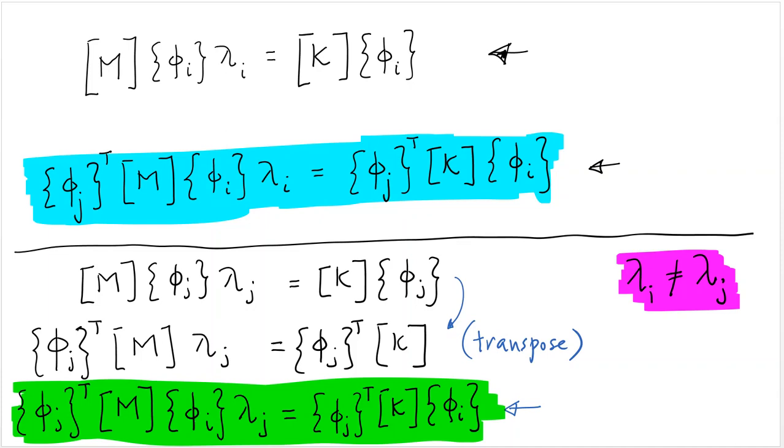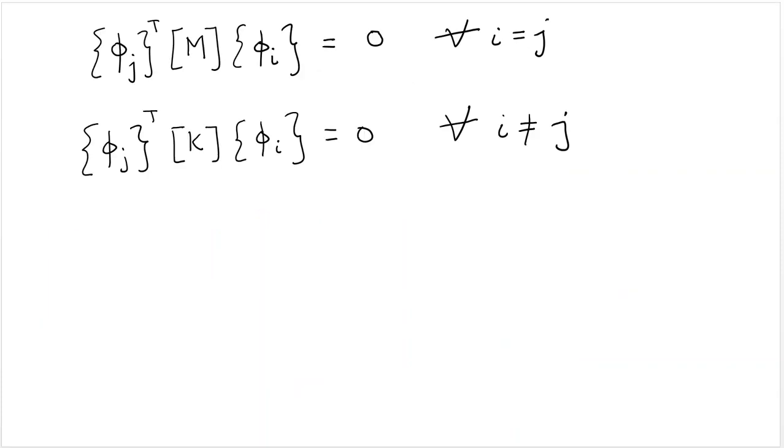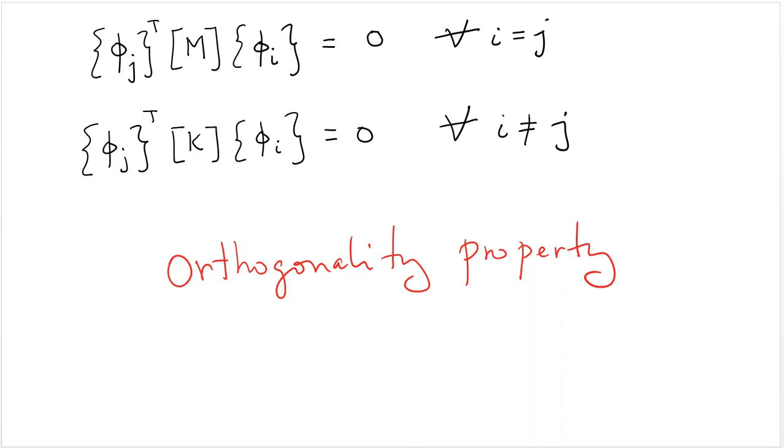Well, the only possibility is that phi j transpose m phi i is equal to zero. And phi j transpose k phi i equal to zero. Which basically means that modes, mode shapes are orthogonal, not among themselves, but with the mass and the stiffness matrix. So this is called the orthogonality property of the mode shapes. Modes are orthogonal with respect to the mass and the stiffness matrix.